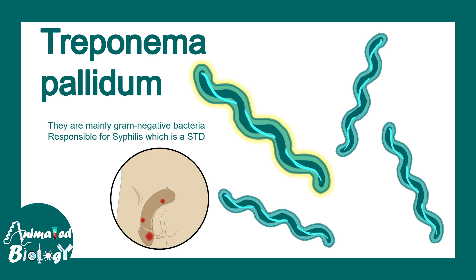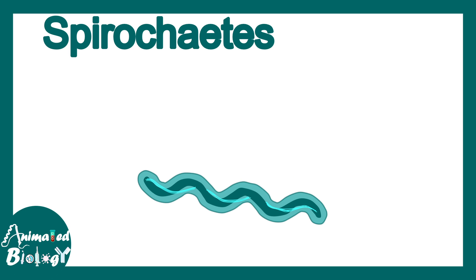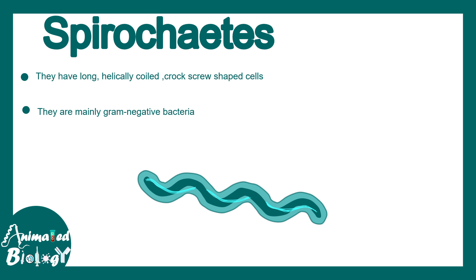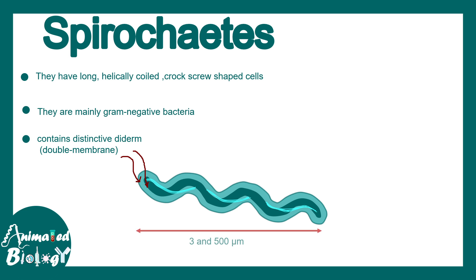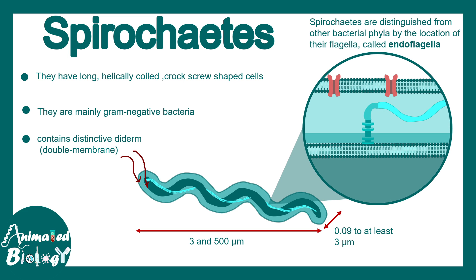When we talk about the microbiology behind this, Treponema pallidum belongs to spirochetes. These are helically coiled corkscrew-shaped bacteria and they are generally gram-negative in nature. They contain a distinct diderm, meaning double membrane, and are roughly 3 to 500 microns long. One of the peculiar features about spirochetes is that they have endoflagella, a flagellar system which runs between these two double membranes.